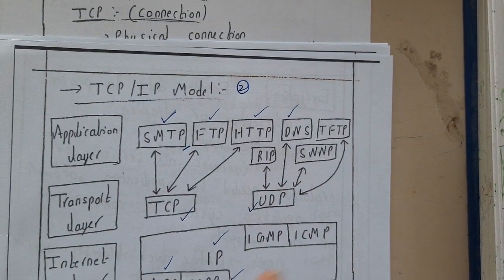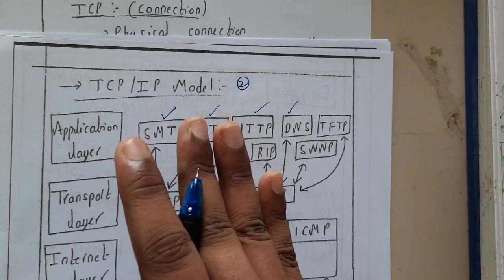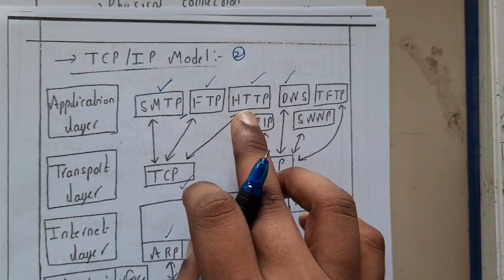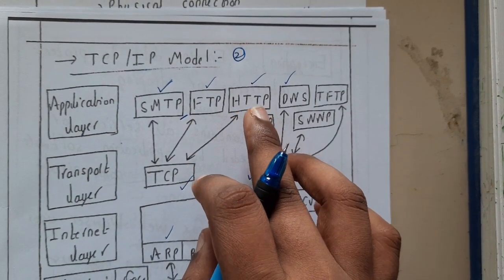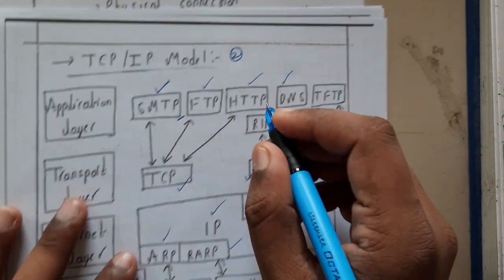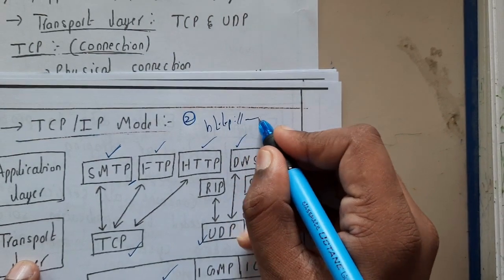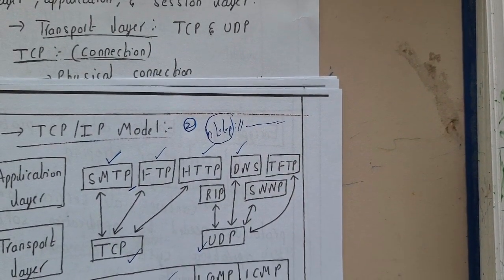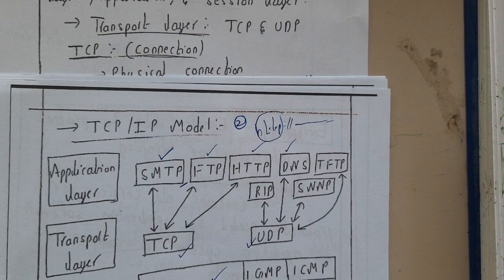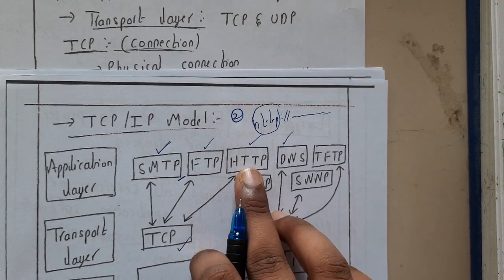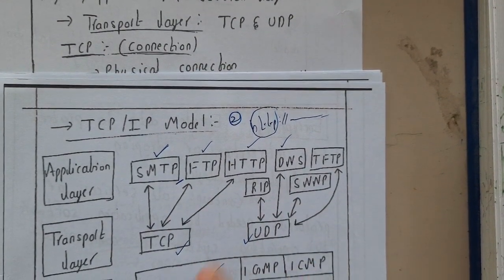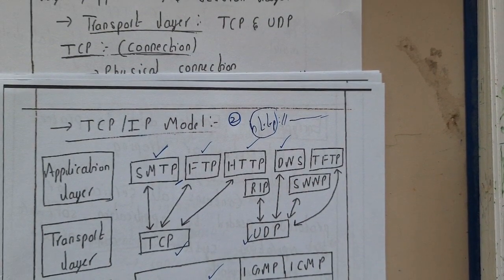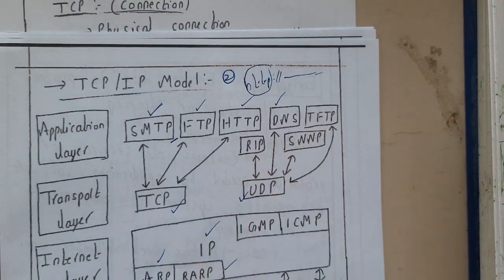The first popular protocol is SMTP — Simple Mail Transfer Protocol — used for sending emails. Similarly, FTP is File Transfer Protocol, used to transmit files. HTTP is Hypertext Transfer Protocol — whenever you use a website you write HTTP://www.example.com, requesting HTML files which are web-browser-compatible files. DNS is Domain Name Server, or Domain Name System, used for linking IP addresses with domain names.